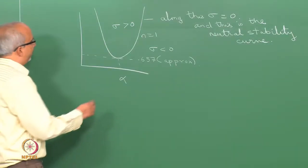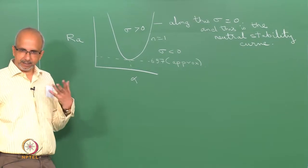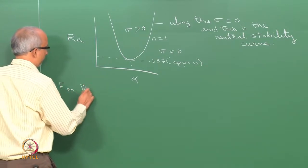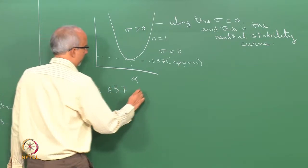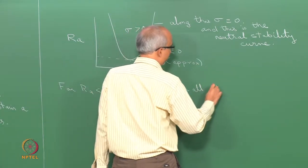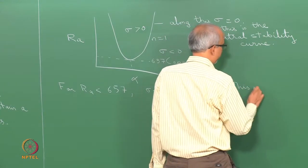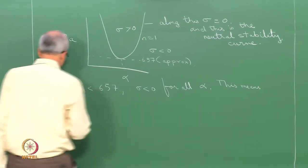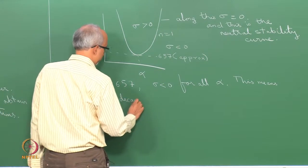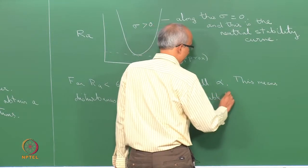The important point here is that we can plot Rayleigh number on the y-axis, which is something I control experimentally. For Rayleigh number less than 657, sigma is negative for all α. This means the disturbances decay and we have a stable steady state.